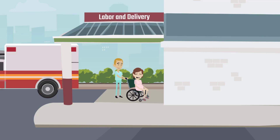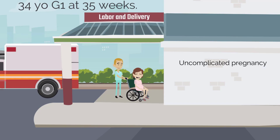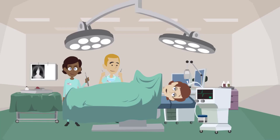Let's meet our patient. She is a 34-year-old gravida 1 at 35 weeks gestational age who presents in active labor. Her pregnancy has been uncomplicated. She is 5 centimeters dilated and the fetus is known to be in the frank breech presentation. Since she is in preterm labor and the baby is breech, a cesarean section is recommended. After discussing the risks and benefits, she consents to the surgery.